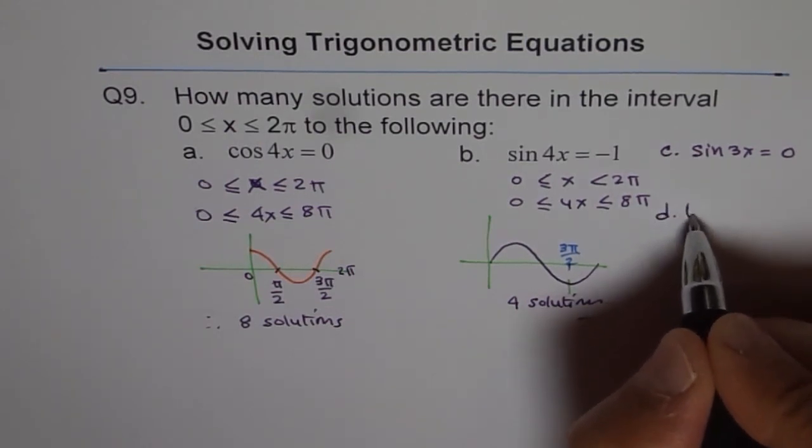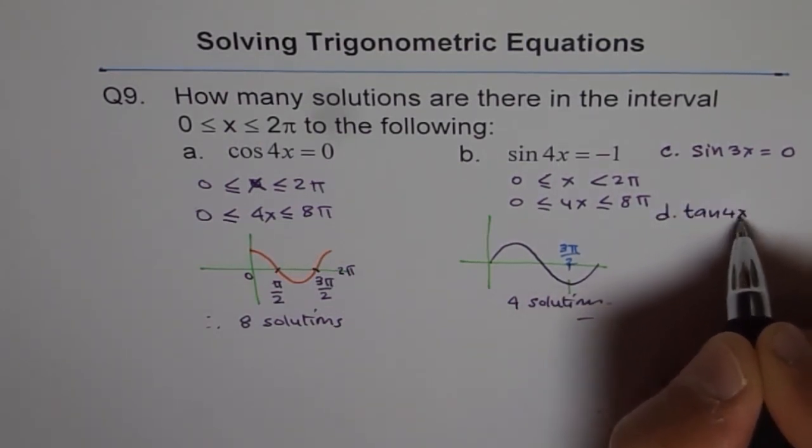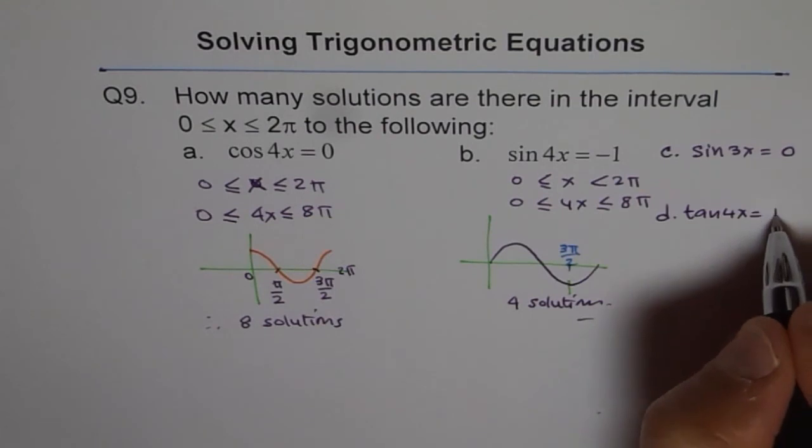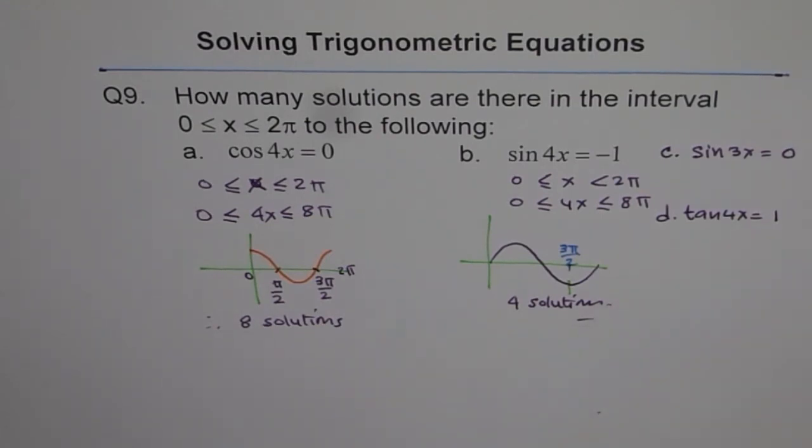And how about this? If I have tan of 4x equals to, let us say, 1, then how many solutions will there be for tan of 4x equals to 1? Okay? Thank you.